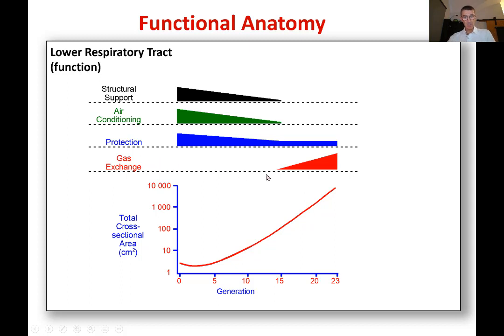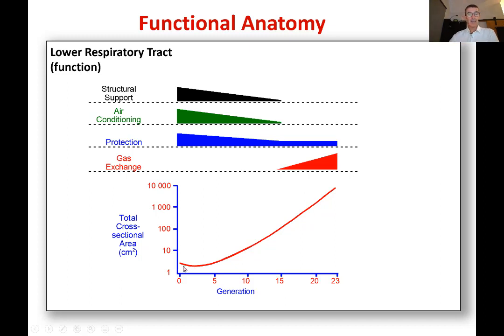Gas exchange only starts once you get down to generation 15, then progressively increases further down. This diagram is important for understanding many diseases — it shows the total cross-sectional area, the size of the hole inside the airway. At generation zero, the trachea, you have about two square centimeters of cross-sectional area. As you move down, even though the airways get smaller, there are so many of them due to the doubling at each generation that the total cross-sectional area gets bigger and bigger.